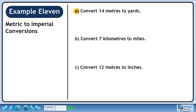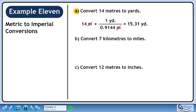In this example, we'll convert metric units to imperial units. In part A, we'll convert 14 meters to yards. We know that one yard is 0.9144 meters. We want meters to cancel out, so put 0.9144 meters in the denominator. We want to keep yards, so put 1 yard in the numerator. 14 divided by 0.9144 is 15.31. Meters cancel out, leaving yards.